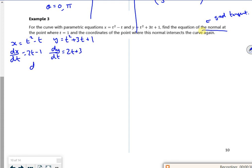So dy by dx is dy by dt, which is 2t plus 3, divided by dx by dt, which is 2t minus 1.